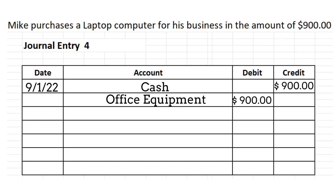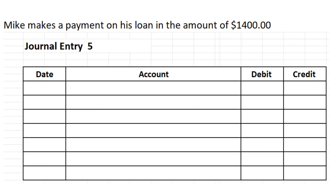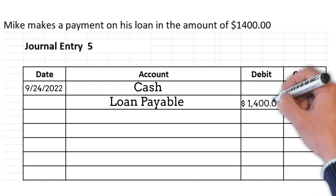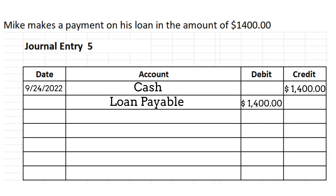In this example, Mike makes a payment on his loan in the amount of $1,400 — journal entry number five. The first account affected is cash, and since cash is being paid out it's going down, so we enter $1,400 on the credit side. The next line is loan payable, entered on the debit side for $1,400. That is how you do a journal entry with debits and credits. Thank you.